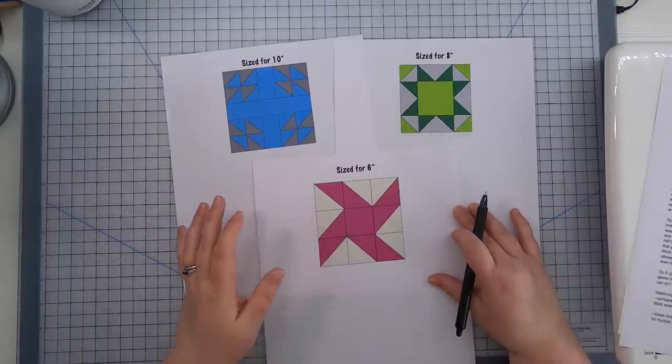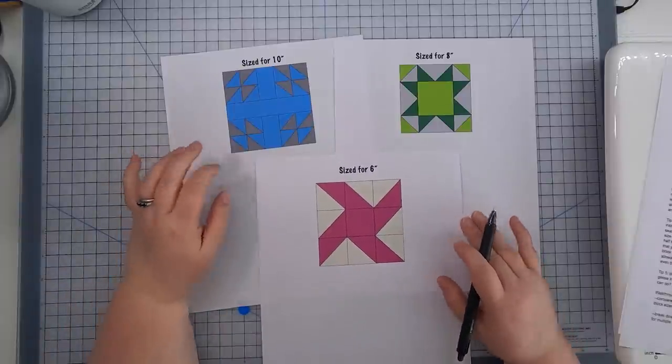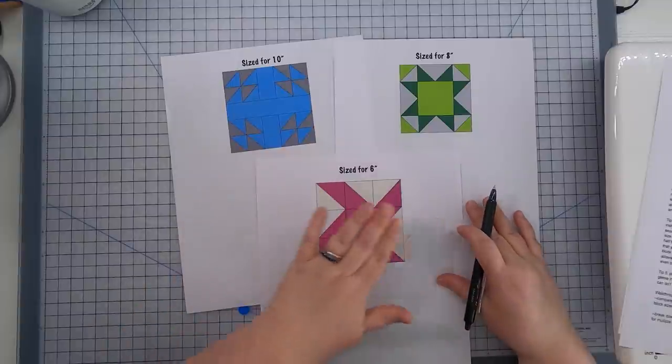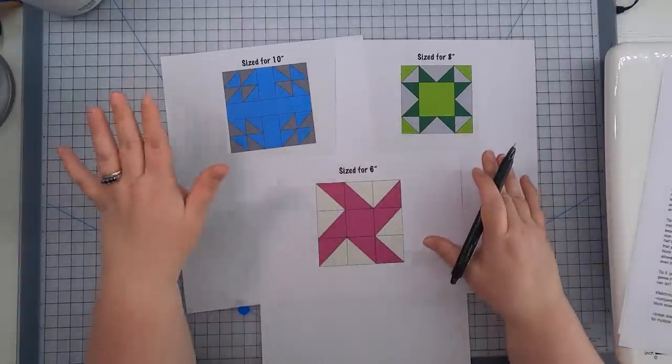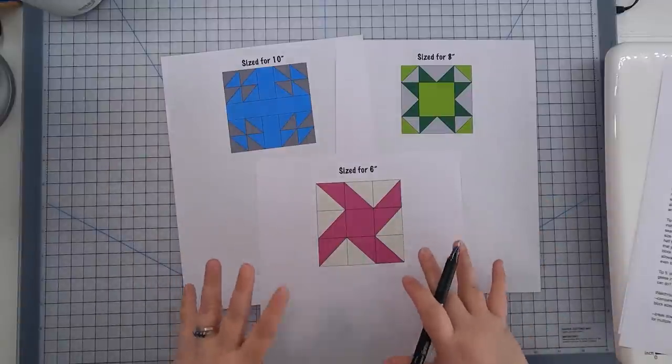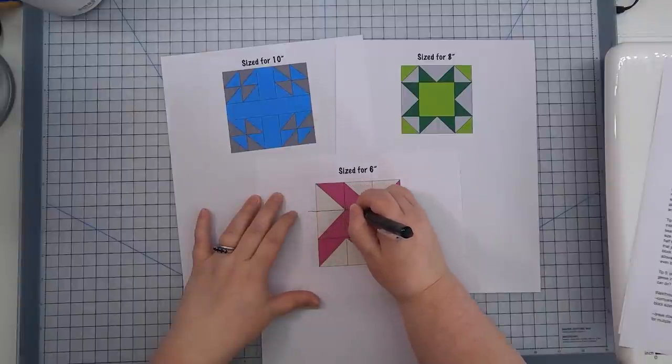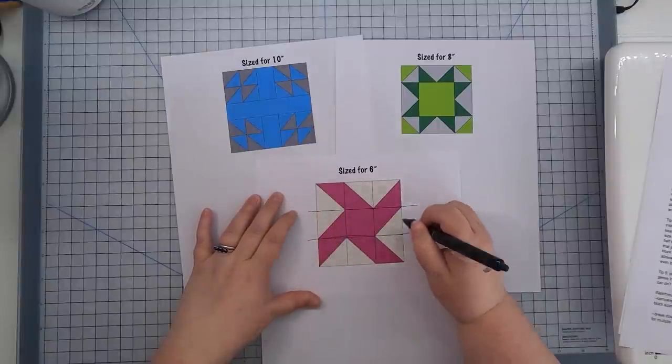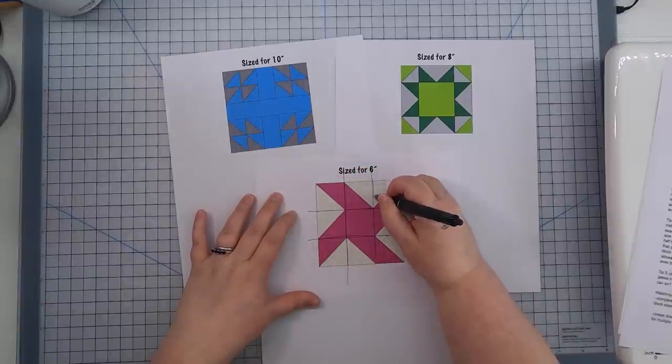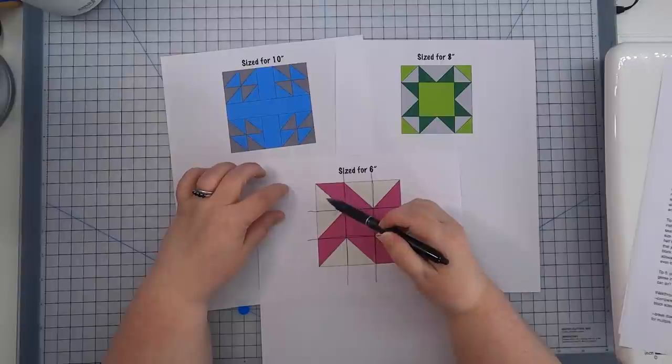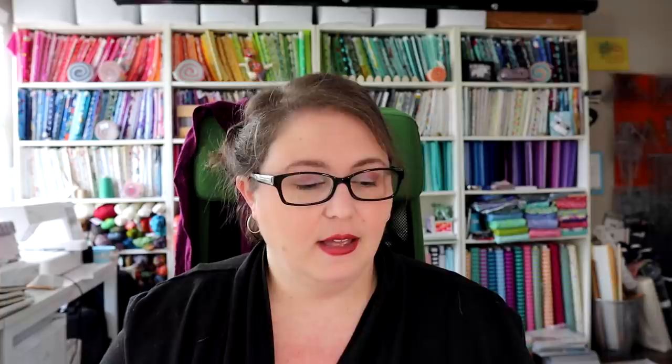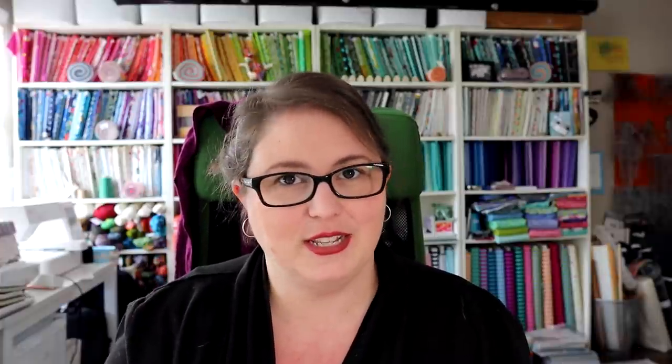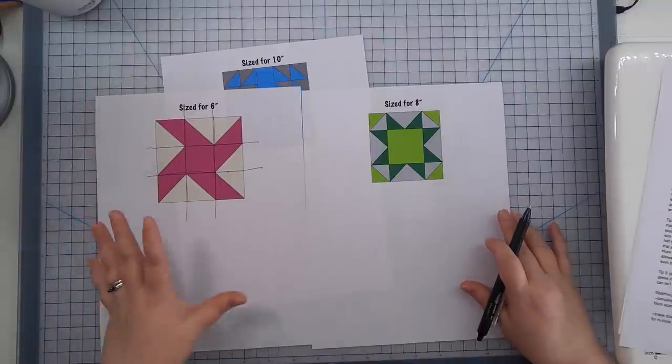So let's jump in with some block math and resize some blocks. I have three printed out here to serve as examples for resizing. And I chose these blocks because they are all based on a different grid system. And that is the key to resizing blocks. Now look at this block compared to this block and this block. This is a three by three grid system block. So if you draw lines at the seam lines, you have a three unit by three unit block.